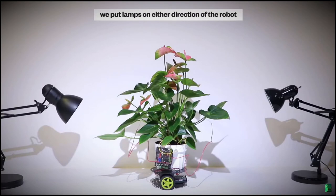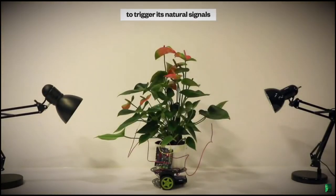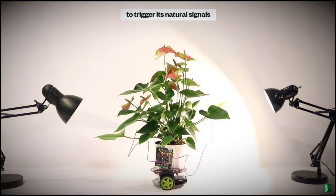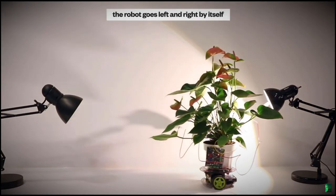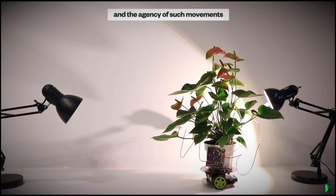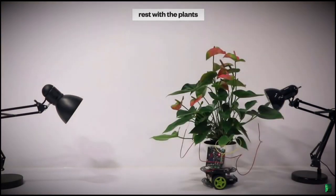We put lamps on either direction of the robot to trigger its natural signals, thus driving the robot underneath automatically. The robot goes left and right by itself and the agency of such movements rests with the plant.